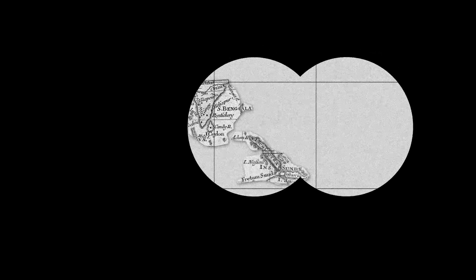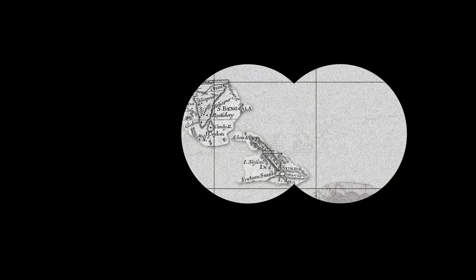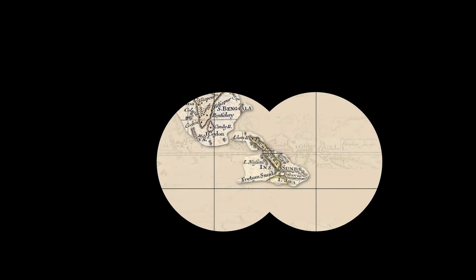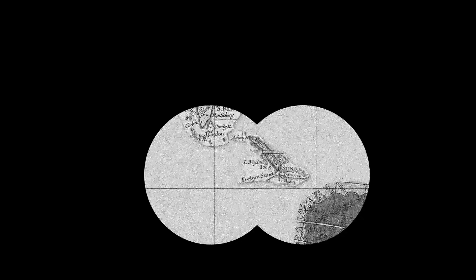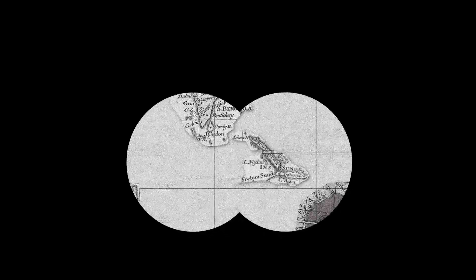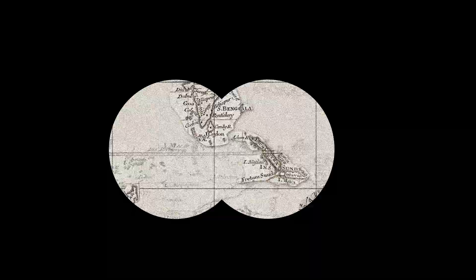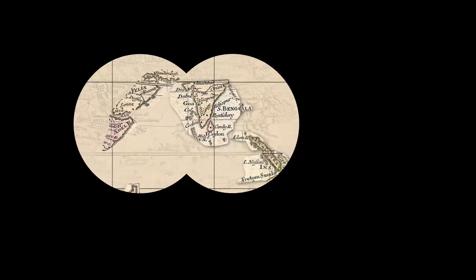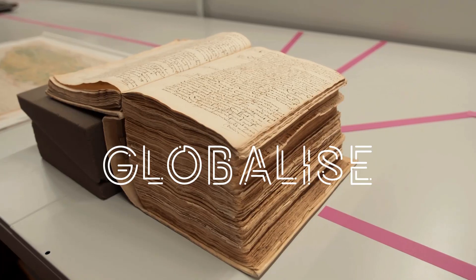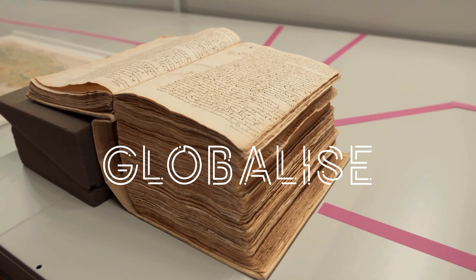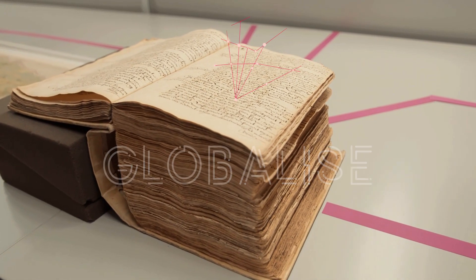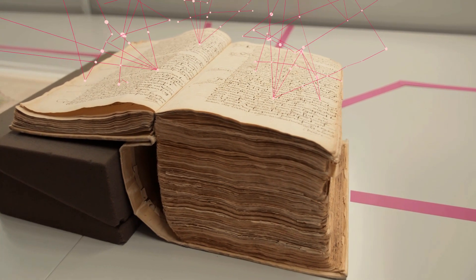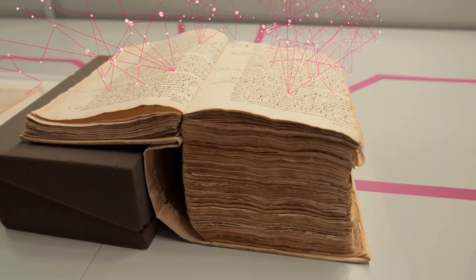The wealth of digital historical data available at the fingertips of researchers is overwhelming and still growing every day. But this material cannot be used to its full potential, as the data often lack context and interfaces only allow for simple search queries. The Globalise project will change this, using a unique source on early modern world history, the general letters of the Dutch East India Company, or VOC.